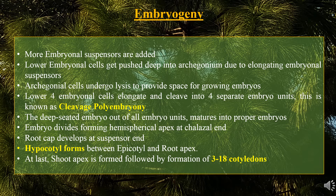Now the embryo divides into a hemispherical apex towards the chalazal end, and towards the suspensor end of the embryo a root cap develops. Another major event is the formation of hypocotyl between the epicotyl and root axis. The region between the root axis and cotyledons is known as the hypocotyl — hypo meaning below, so below the cotyledons. The region above the cotyledons up to the shoot axis is known as the epicotyl — epi meaning above, so above the cotyledons. At last, the shoot apex is formed followed by the formation of 3 to 18 cotyledons. This is a polycotyledonous condition, again a feature of gymnosperms.